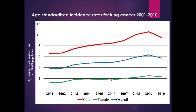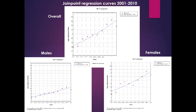The joinpoint regression analysis curve for age-standardized incidence rate shows a gradual increase from 2001 to 2010 in males, females, and the overall population. Statistical analysis confirmed all three trends to be significant, indicating a significant rising trend in incidence.